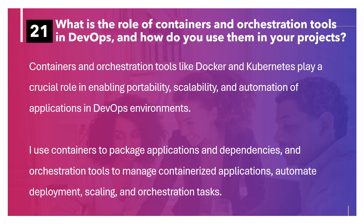What is the role of containers and orchestration tools in DevOps and how do you use them in your projects? Containers and orchestration tools like Docker and Kubernetes play a crucial role in enabling portability, scalability and automation of applications in DevOps environments. I use containers to package applications and dependencies and orchestration tools to manage containerized applications, automate deployment, scaling and orchestration tasks.